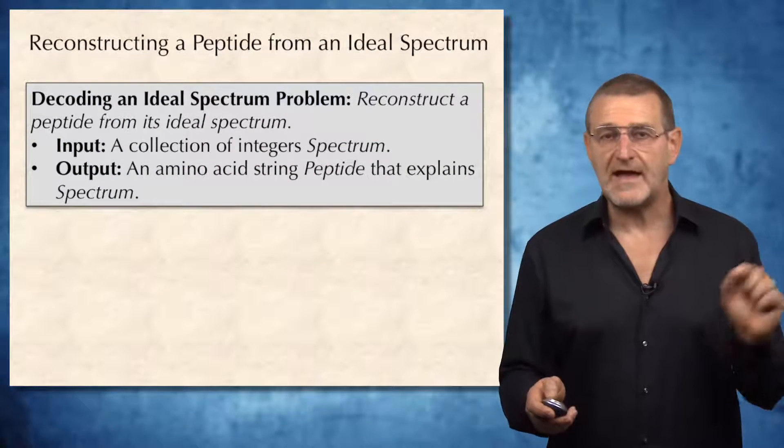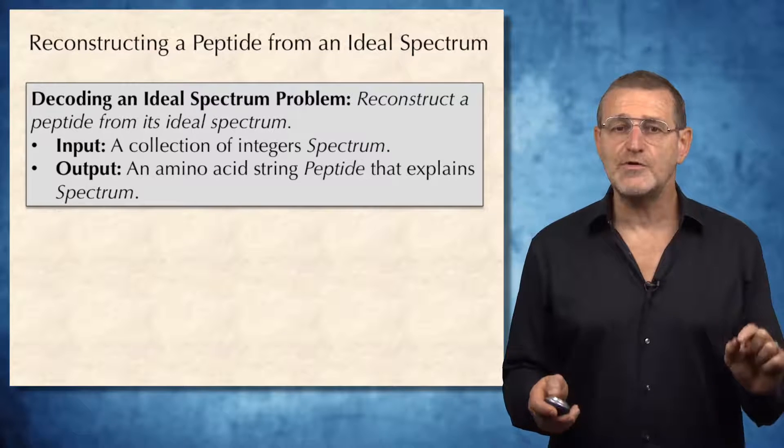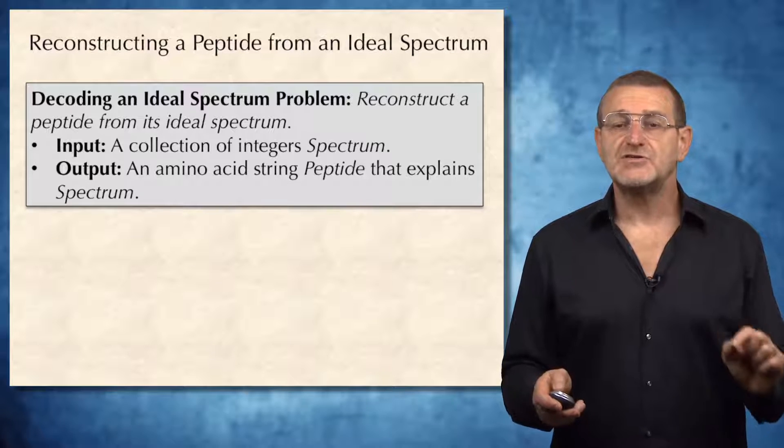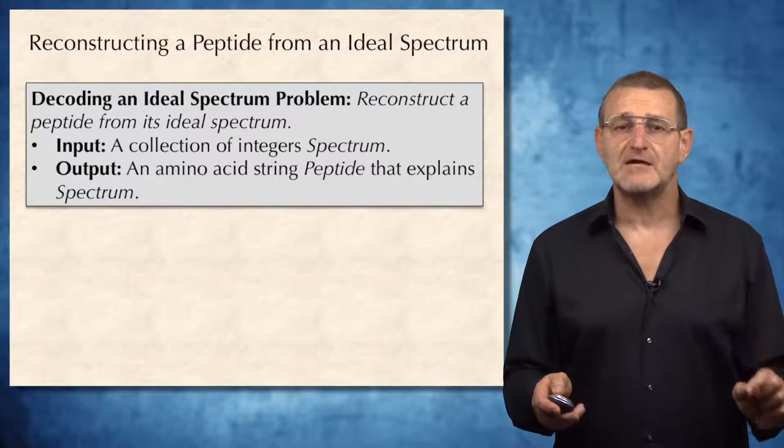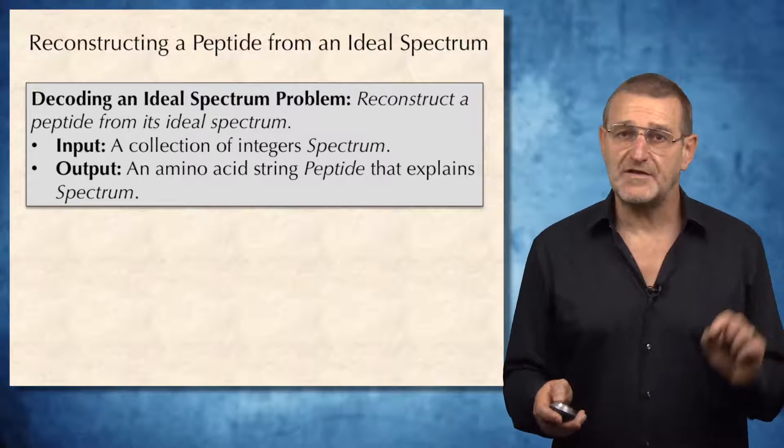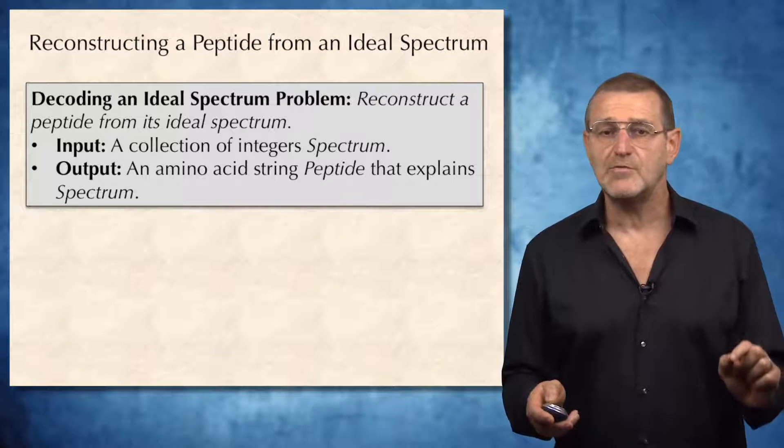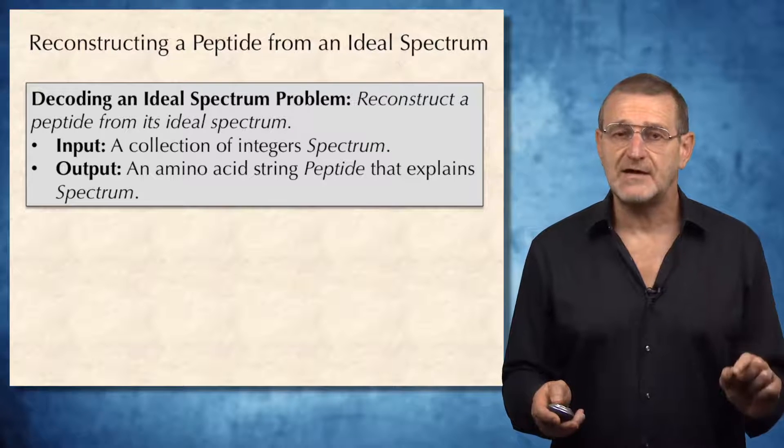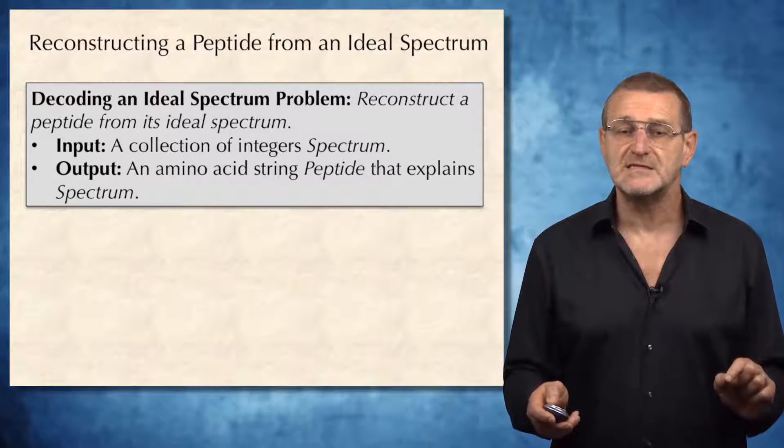So, we have now a decoding problem, which is reconstruct a peptide from its ideal spectrum. Input: a collection of integers spectrum, and output: an amino acid string peptide that explains this spectrum.